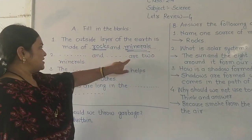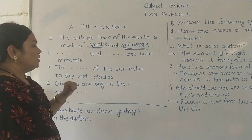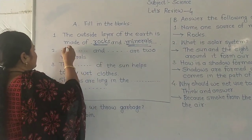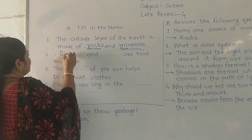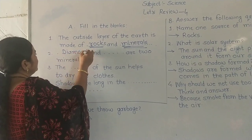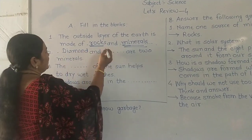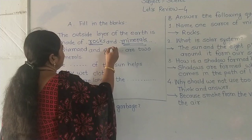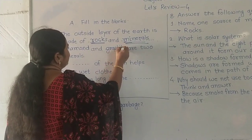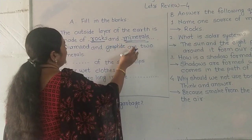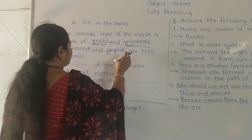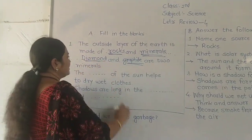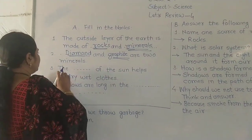Number 2: blank and blank are two minerals. Our answer is diamond and graphite. Diamond and graphite are two minerals.